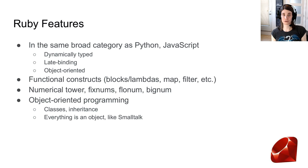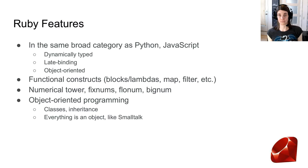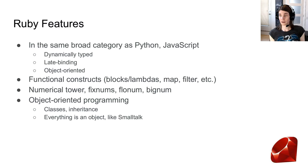In terms of features, Ruby fits in the same broad category as Python and JavaScript — a dynamically typed language with late binding that is object-oriented. It has functional constructs such as blocks, essentially lambdas, map and filter. It has a numerical tower with fixnums, flonums, and bignums, and in-depth OOP facilities including classes, inheritance, and the everything-is-an-object design of Smalltalk.